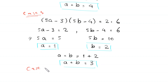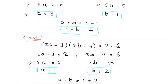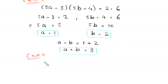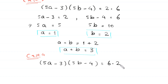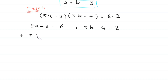We solve case 4, which is 6 times 2. We set (5a minus 3)(5b minus 4) equal to 6 times 2. So 5a minus 3 equals 6, which implies 5a equals 9 and a equals 9 over 5. That is not an integer, so no integer solutions can be found from this case.